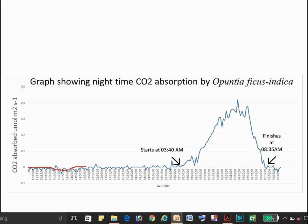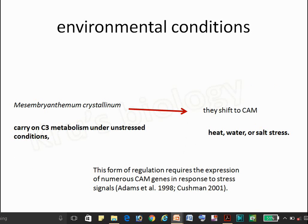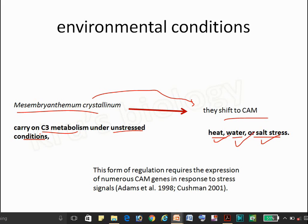The graph shows that in the night condition there is a gradual increase of CO2 concentration. Under unstressed conditions, some plants like Titania phase indica carry out C3 metabolism, but when heat stress, water stress, or salt stress is applied, these plants shift into CAM metabolism. This means some CAM genes are responsible for stress signaling.